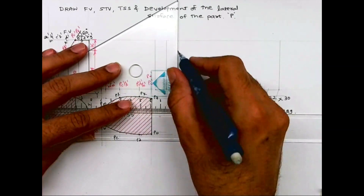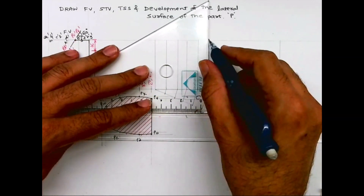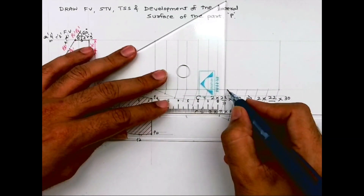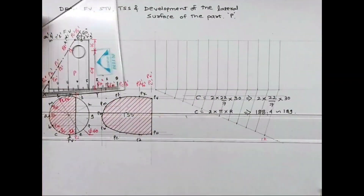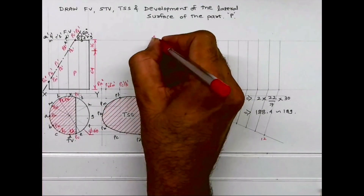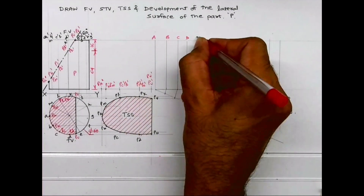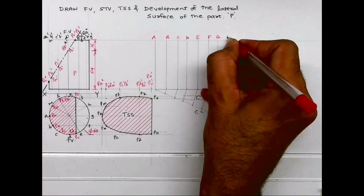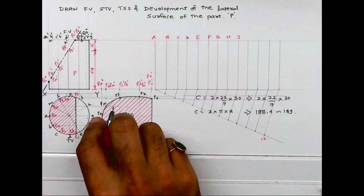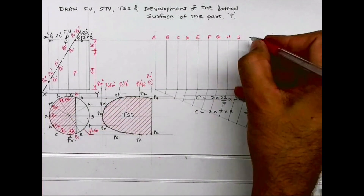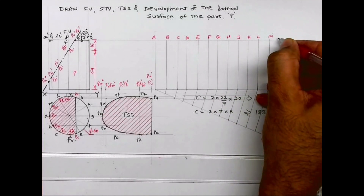Now draw a vertical line. So this is A, B, C, D, E, F, G, H, J — I'm not writing I — K, L, M, N, A.